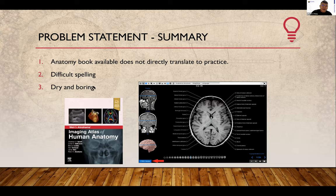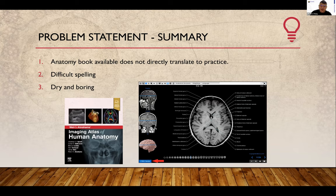There are some fixes available. You can get a textbook called Imaging Anatomy of Human Anatomy, but it's a big textbook and it doesn't help the dry and boring aspect. There is also an electronic version that you have to pay for in euros, annually, and there's no pre-set quiz — it's just a reference. So what is the solution here?